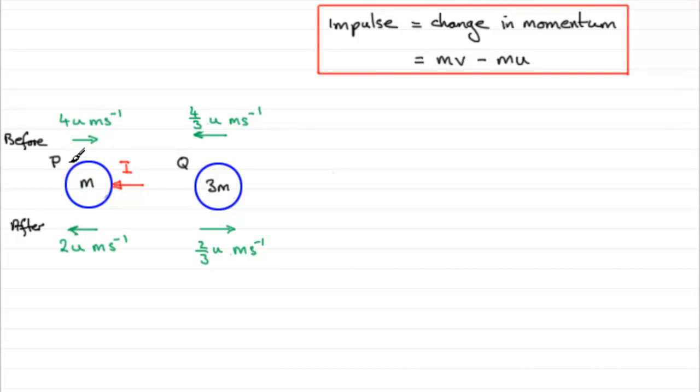So if we consider P, let's just mark that in. Tell the reader that you're considering that particular particle P. We'll take positive in the direction of the impulse. You don't have to do that, but it is a lot better if you do. So positive in the direction of the impulse.